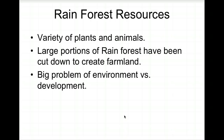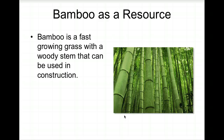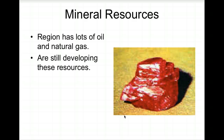There's a variety of plants and animals in the rainforest, but large portions have been cut down to create farmland — a balance between development and the environment. Bamboo is a fast-growing grass with a woody stem used in construction: bridges, houses, and more. In terms of mineral resources, Myanmar produces rubies, and the region also has lots of oil and natural gas that are still being developed.